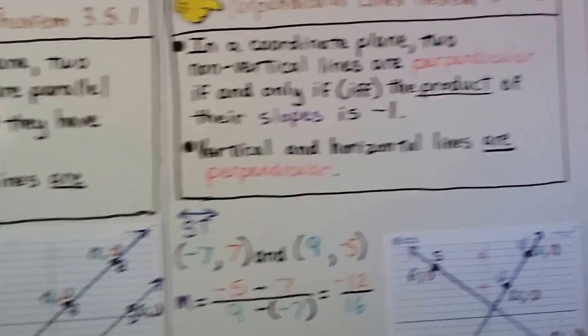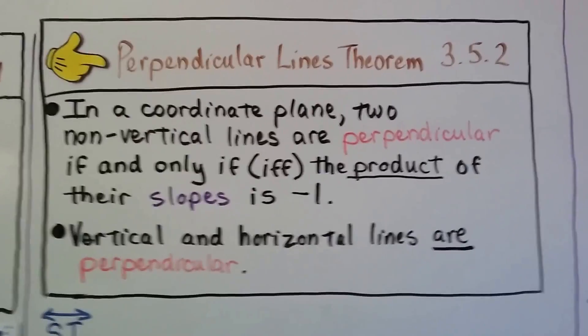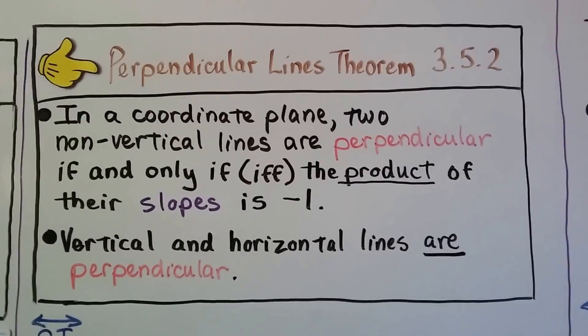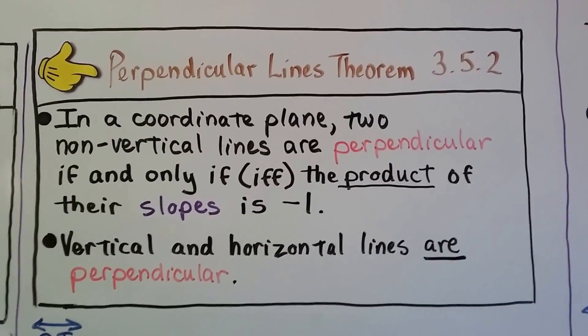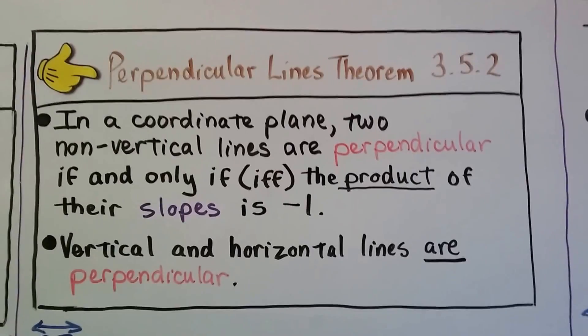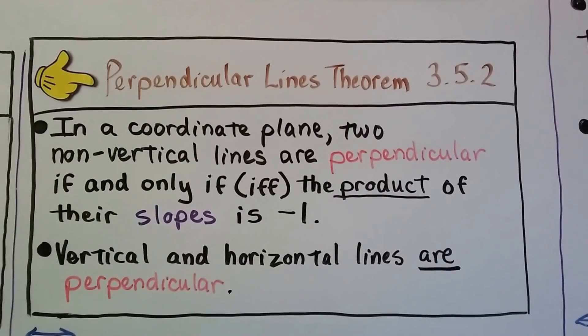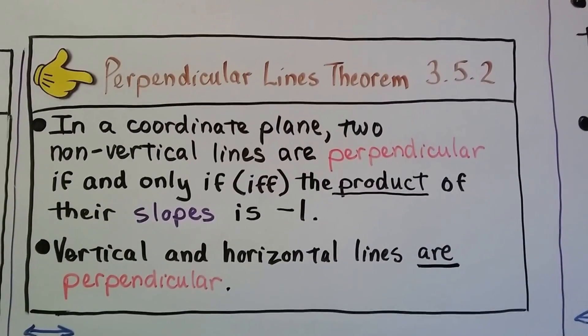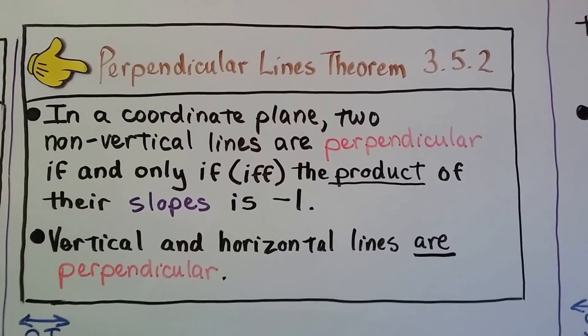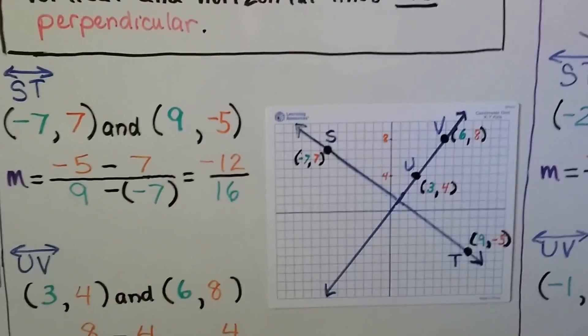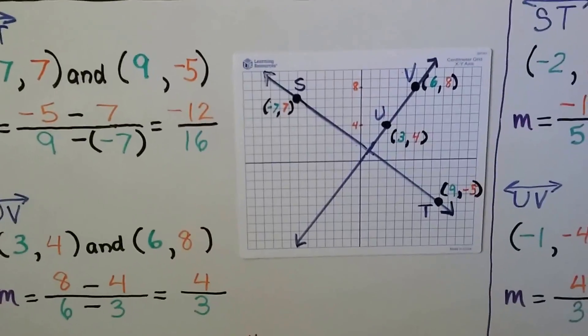Now we have the perpendicular lines theorem. It says in a coordinate plane, two non-vertical lines are perpendicular if and only if the product of their slopes is -1. So you see the word product—we know we must have to multiply the two slopes together. And vertical and horizontal lines are perpendicular. So if they follow the lines on the grid, we know they're perpendicular, right?